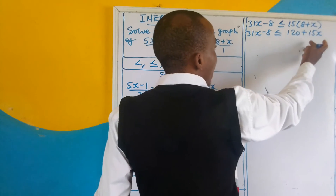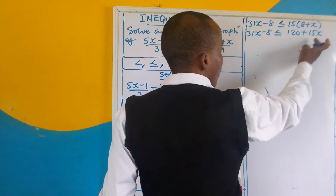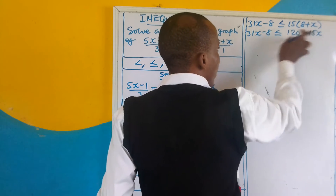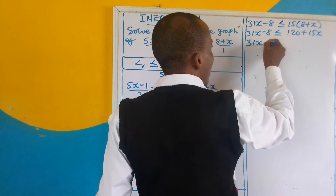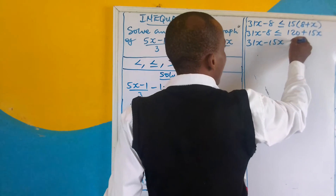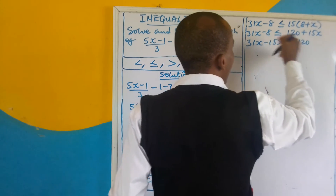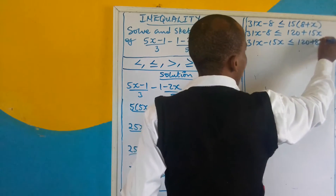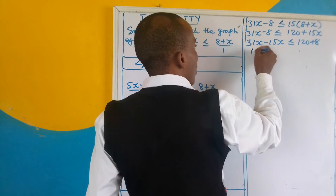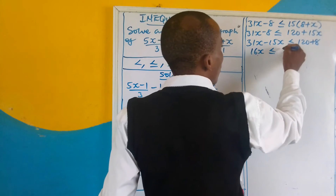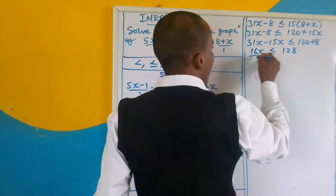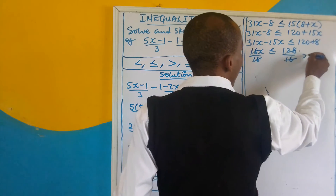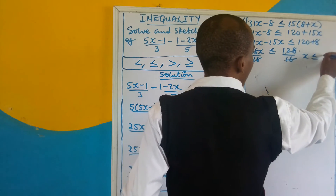Now let's move the x terms together and combine like terms. 15x will come to meet 31x — as it's positive on that side, it becomes negative here. So we have 31x minus 15x is less than or equal to 120. Move negative 8 to the other side — as it's negative, it becomes positive 8. 31x minus 15x gives us 16x is less than or equal to 128. We divide both sides by 16, so x is less than or equal to 8.